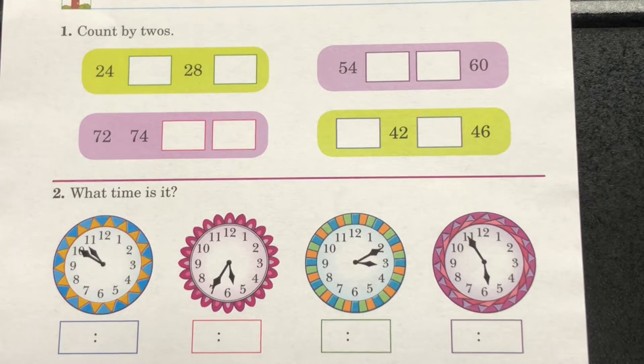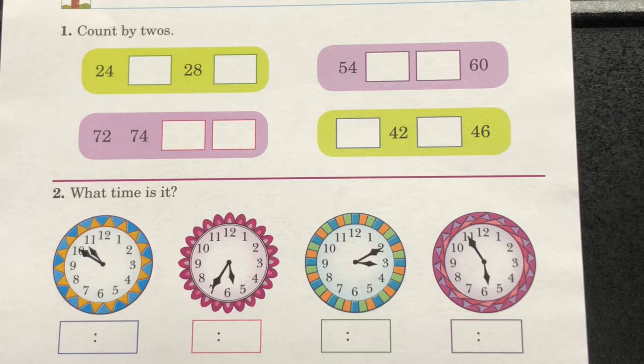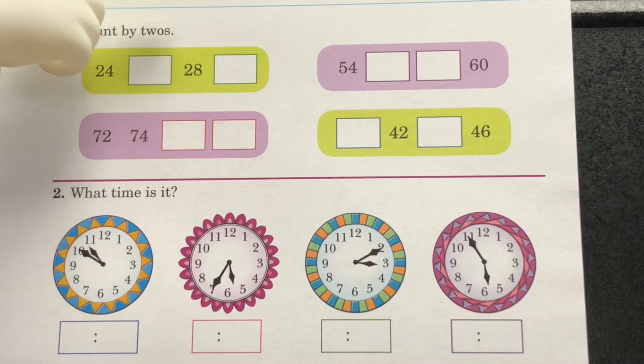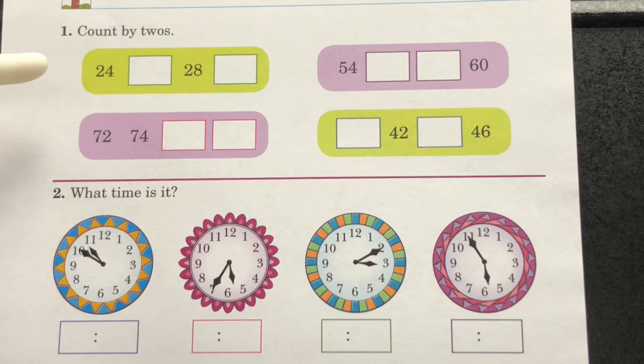All right boys and girls, take a look at our Arithmetic page 337. As always, please make sure you have your name on all your paper. Take a look at section 1. Section 1 says count by twos. Complete section 1. Section 2 says what time is it? Look at the clock carefully and mark the time.